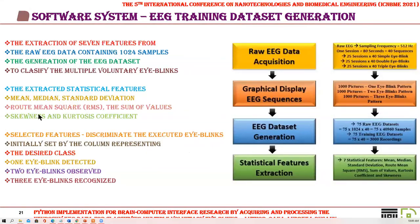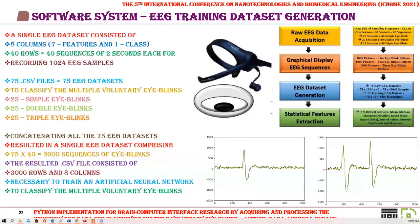It followed the extraction of 7 statistical features from the raw EEG data containing 1,024 samples and the generation of the EEG dataset to classify multiple voluntary eye blinks. The extracted statistical features were median, standard deviation, root-mean-square, sum of values, skewness, and kurtosis coefficient. A single EEG dataset consisted of 8 columns (7 for features and 1 for class) and 40 rows. From 75 CSV files — 25 with simple, 25 with double, and 25 with triple eye blinks — concatenating all 75 datasets resulted in a single EEG dataset comprising 75 × 40 = 3,000 sequences.